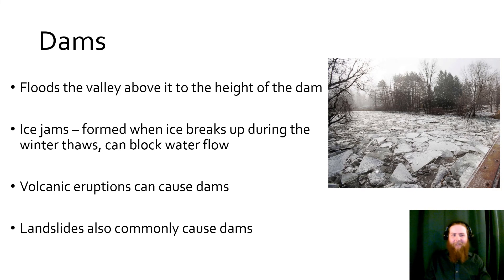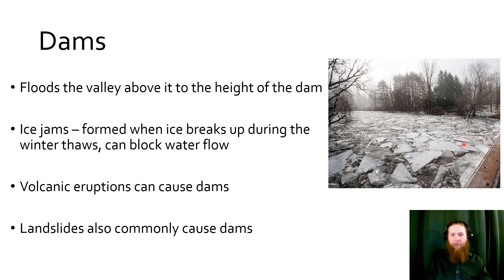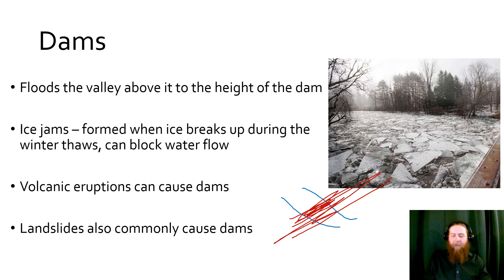A dam is any structure blocking the river — the water behind it fills up to the dam's level. An ice jam is a type of dam that forms when ice breaks up during winter thaws and gets stuck on a structure, like a bridge. This ice accumulates with a lot of pressure behind it. Volcanic eruptions can create dams as lava flows over a river, and landslides are also a common cause. We also get dams in smaller streams from beavers or man-made activities.